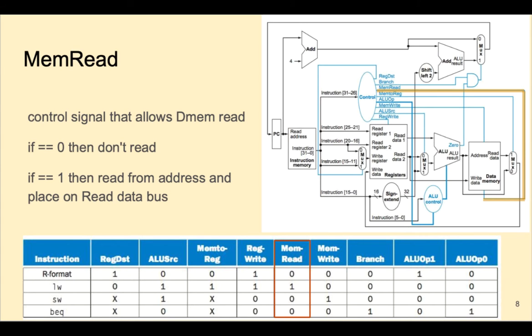MemRead is 1 for load word, which reads data from memory, and 0 for all other instructions, since they don't have permission to read from memory.